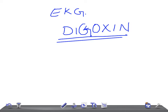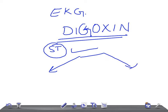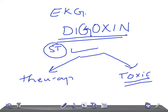Digoxin has a characteristic effect on the ST segment. There are two types of EKG changes: one at therapeutic levels and another at toxic levels. If it's toxic, you have to be very conscious and treat it. That's why you should know these EKG changes — they help you determine the level of digoxin in the blood.